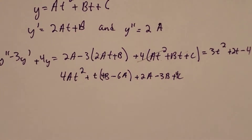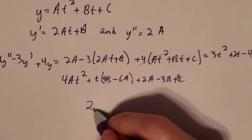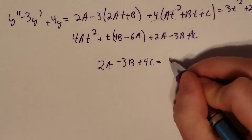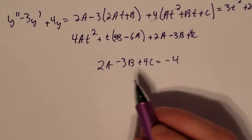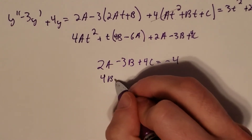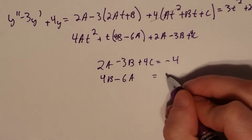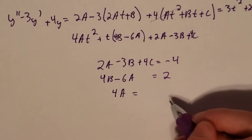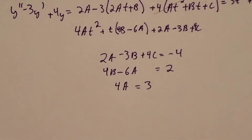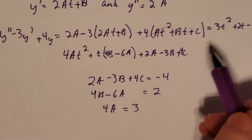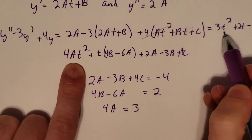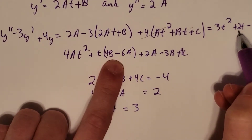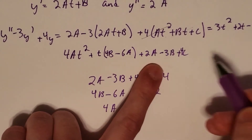And then we match up the coefficients. So we have three equations: 2a minus 3b plus 4c is equal to negative 4; and 4b minus 6a is equal to 2; and 4a is equal to 3. We get those by matching: 4at squared with 3t squared, t times (4b minus 6a) with 2t, and the constant terms.